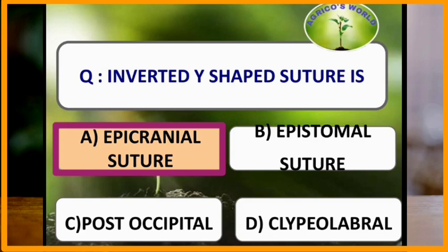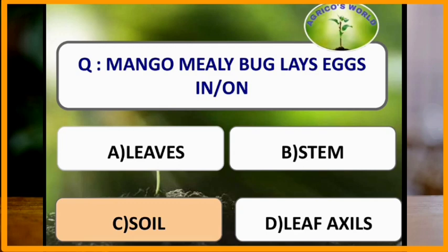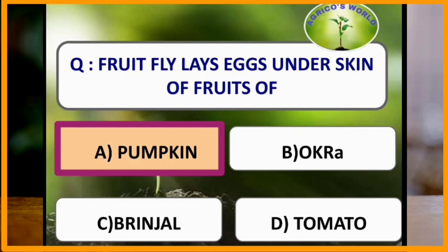The type of wing coupling mechanism present in honeybees is the hamulate type. Mango mealybug lays its eggs on soil.